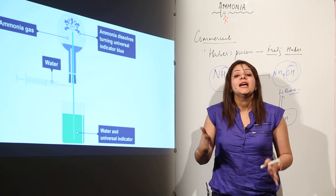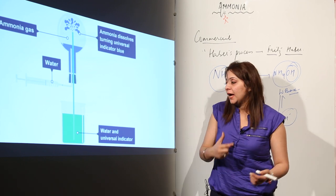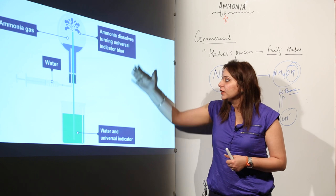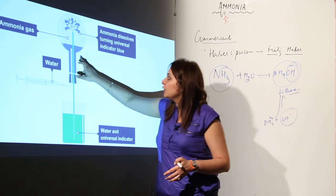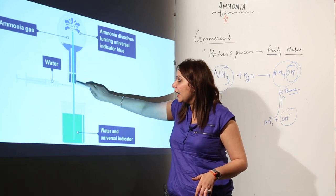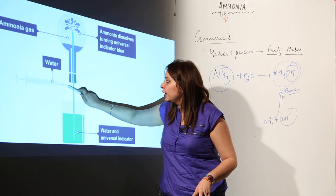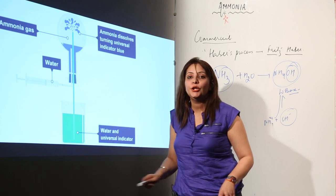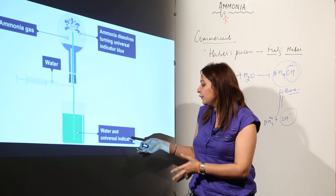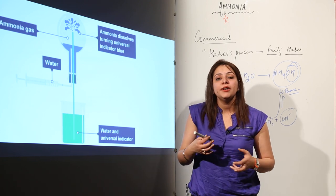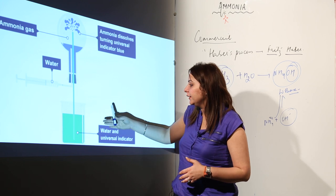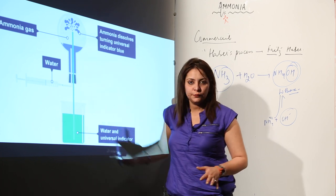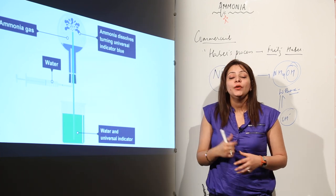As far as the solubility of ammonia is concerned, it is highly soluble in water. I will explain this using the fountain experiment. Here we have an apparatus: a round bottom flask with a rubber stopper that has two holes — one for a dropper and the other for a jet pipe going into a beaker. The beaker contains red litmus solution.